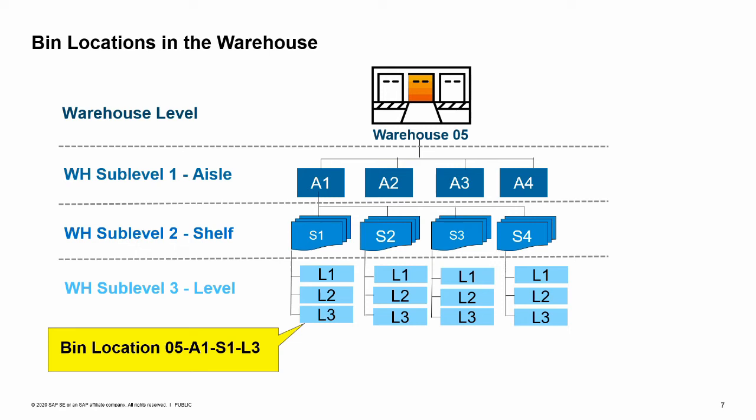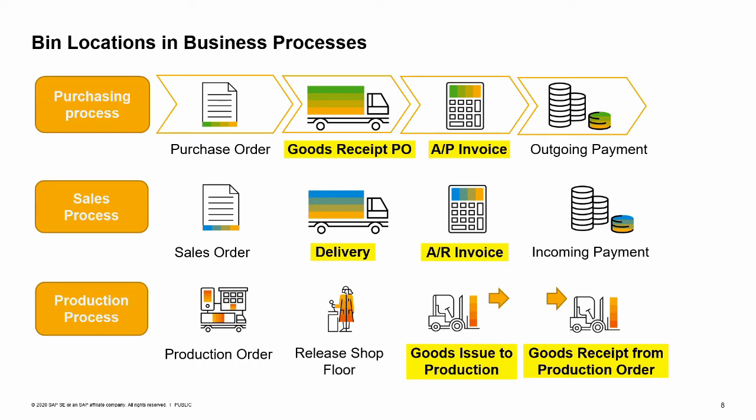Each aisle is made up of six shelves S1 through S6, and each shelf has three levels. The bin location code is made up of the warehouse code plus each sublevel. Here we see the third level of shelf one on aisle one has a bin location code of 05A1S1L3. Bin locations are available on all documents that have inventory movements.